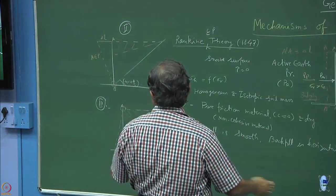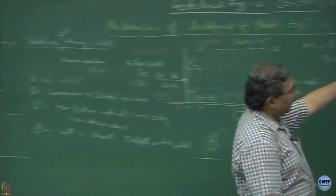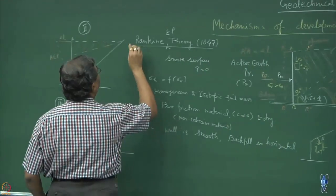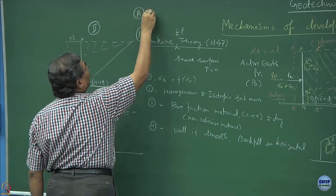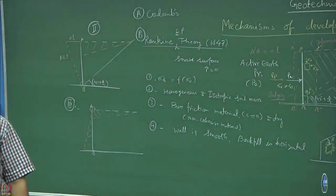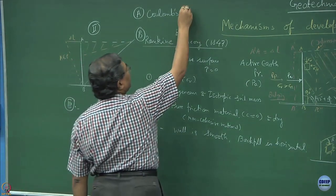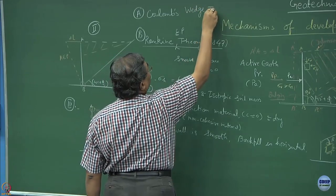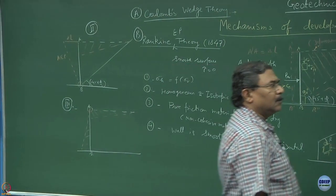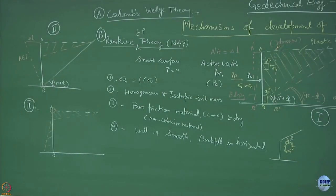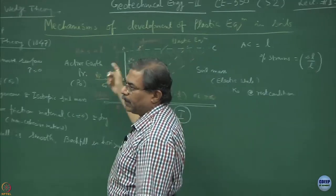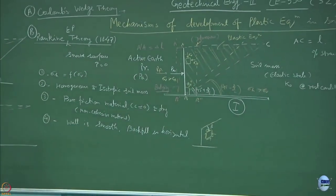Considering all these types of models, these equations have been derived. There is another theory proposed by Coulomb, which we call Coulomb's rigid block wedge theory. This theory deals with the free body diagram of the wedge that is forming in the plastic equilibrium state, and then by using the concepts of equilibrium you can solve it. This part we will take up later on.